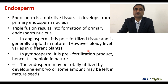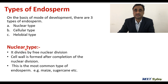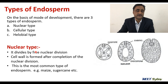Now let's talk about the types of endosperms. Depending upon the mode of cell division, three types have been recognized: nuclear type, cellular type, and helobial type. In the case of nuclear type, it divides by free nuclear division, and these divisions are not followed by cell wall formation. The cell wall does form, but only after all divisions have been completed. This is why we call it free nuclear division. This is the most common type, found in maize and sugarcane.